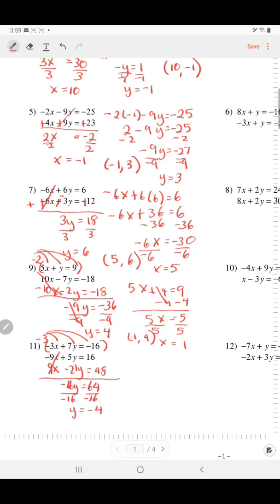Y equals negative 4. Plug that into either of the equations. I choose the first. So negative 3x plus 7 times negative 4 equals negative 16. Negative 3x minus 28 equals negative 16. Add 28. So negative 3x equals 12. Divide by negative 3. X equals negative 4. Present your answer: (-4, -4).